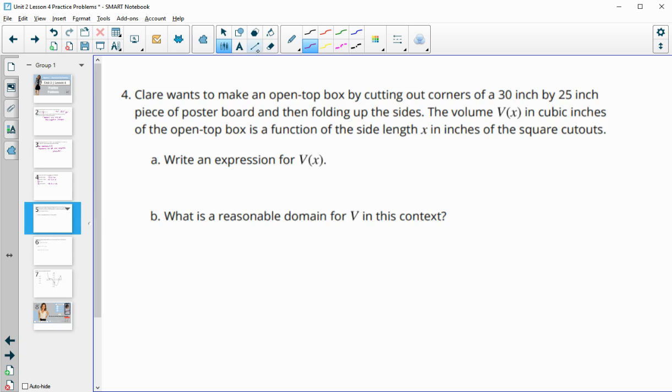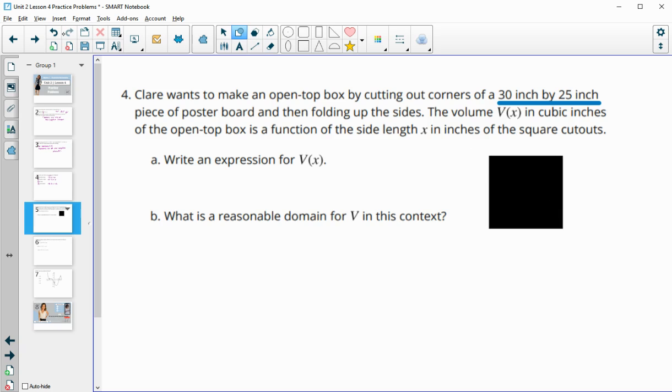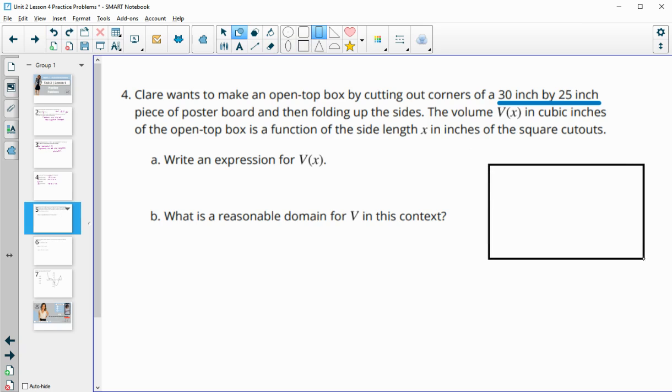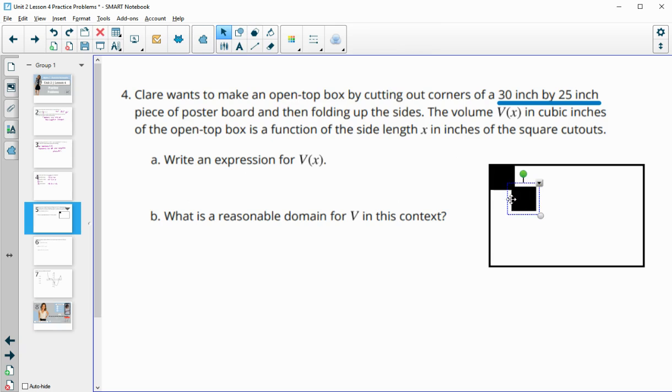Number 4: Claire wants to make an open top box by cutting out the corners of a 30-inch by 25-inch piece of poster board and then folding up the sides. The volume in cubic inches of the open top box is a function of the side length x of the cutout. Write an expression. I'll draw a little picture here - it's going to be 30 by 25, and we're cutting out little squares from the corners. We're going to cut an x by x box out of each corner and then fold it up to make this open top box.